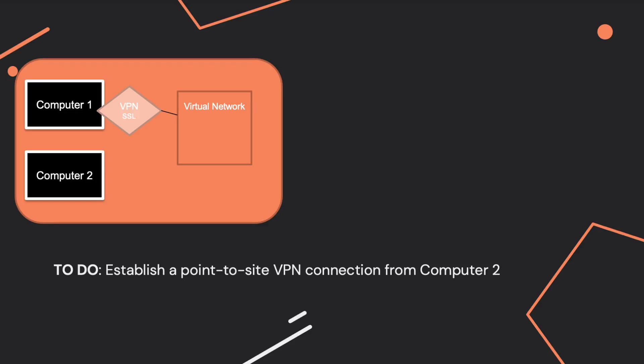Let's think about another situation. We have two computers, one and two. We have a virtual network, and computer one is connected to it using a point-to-site VPN connection that uses a self-signed certificate. The VPN client configuration package is downloaded and installed on computer two as well. You have to make sure that you have the same connection between computer two and the virtual network.